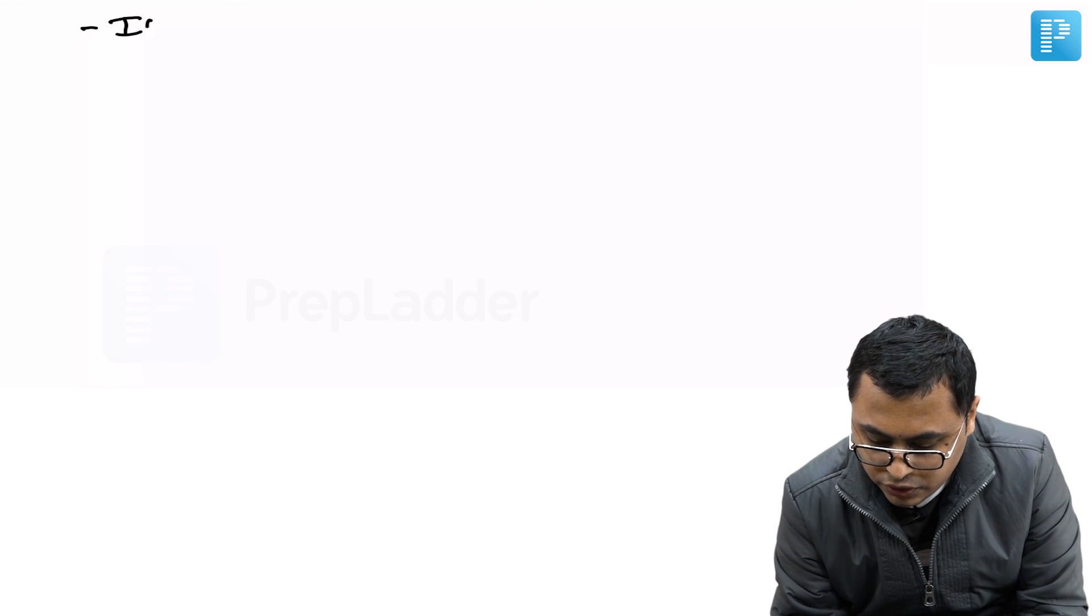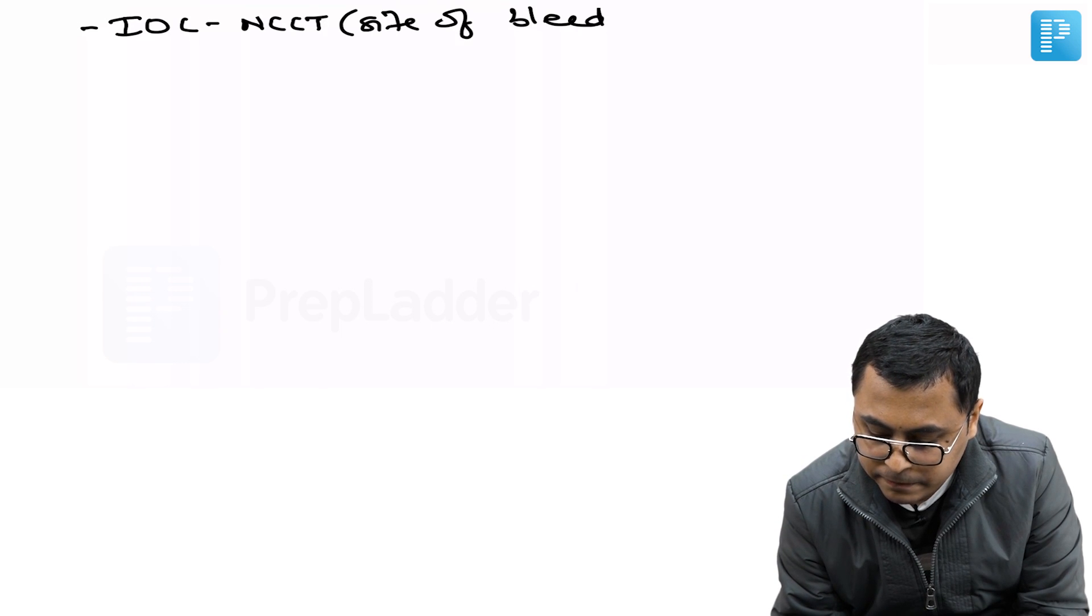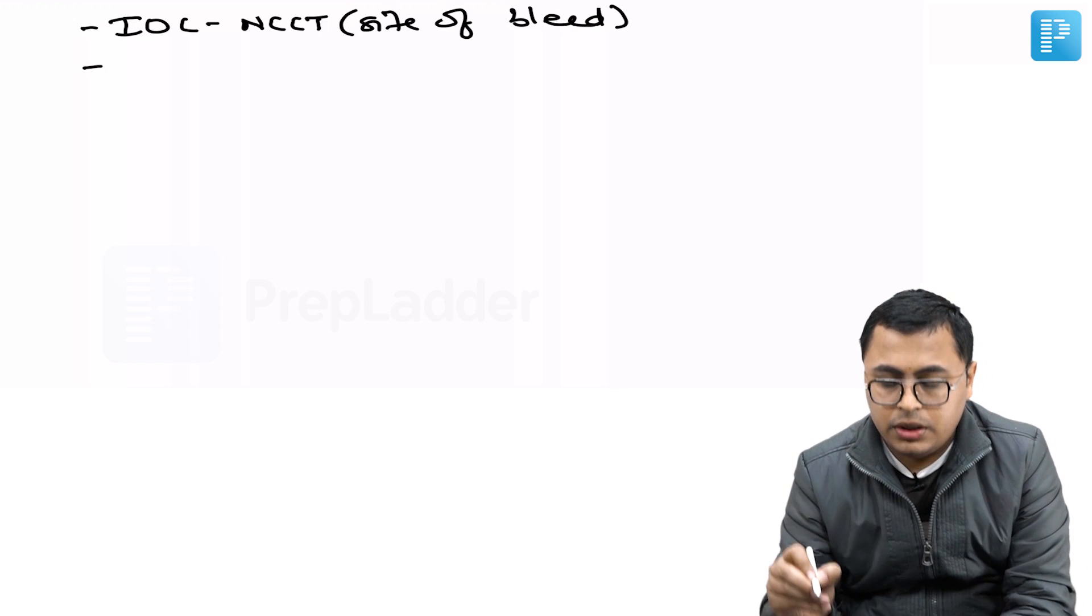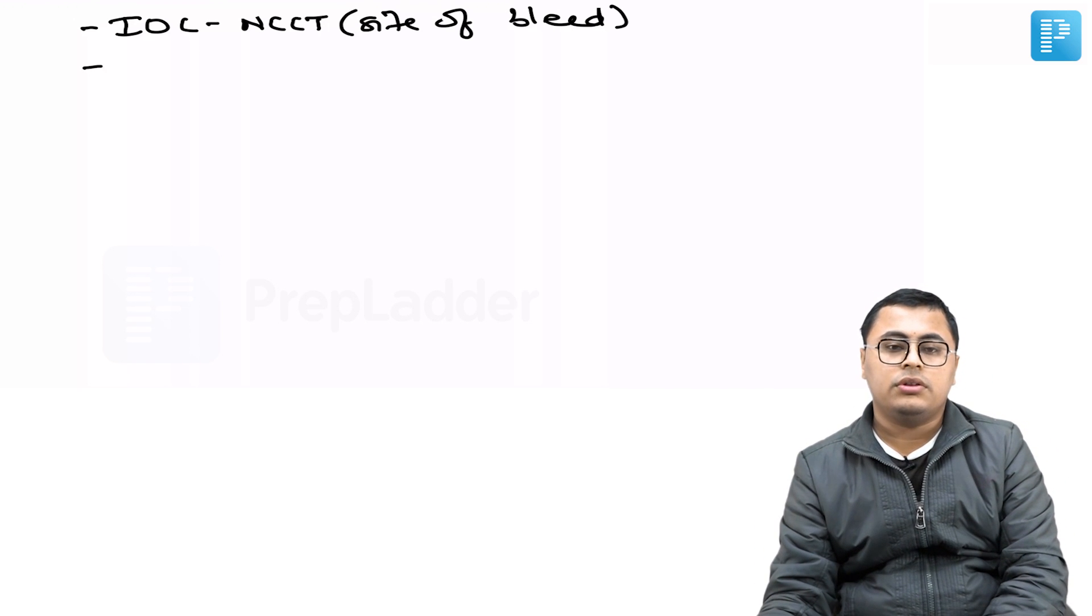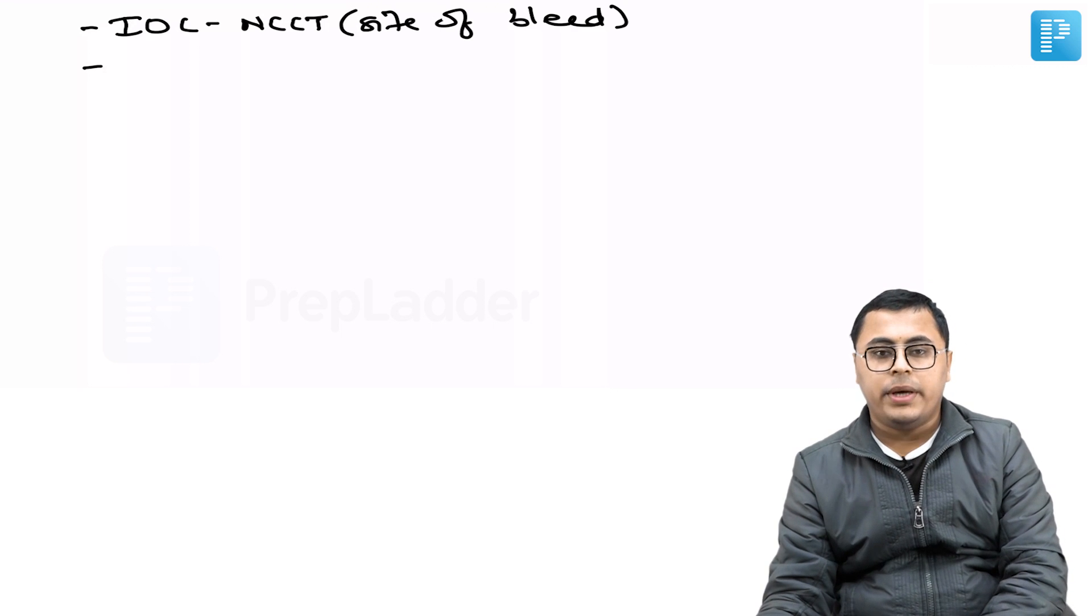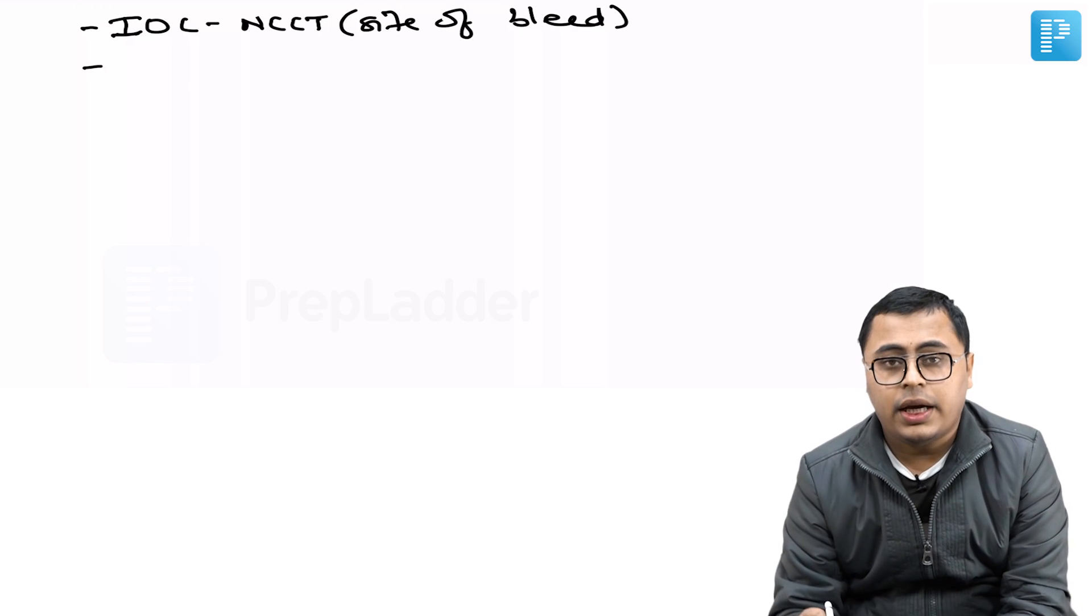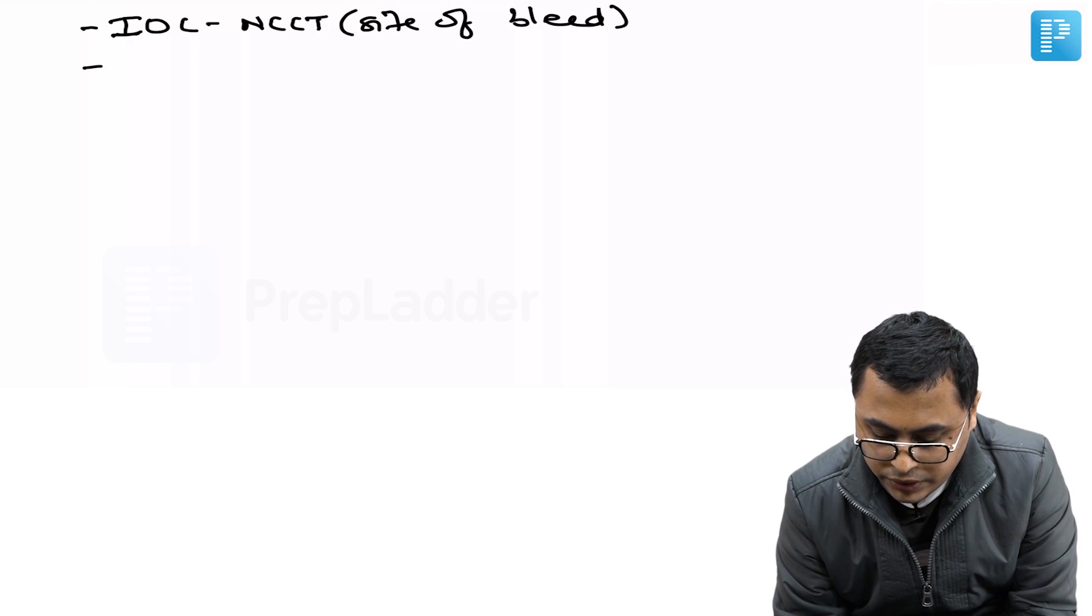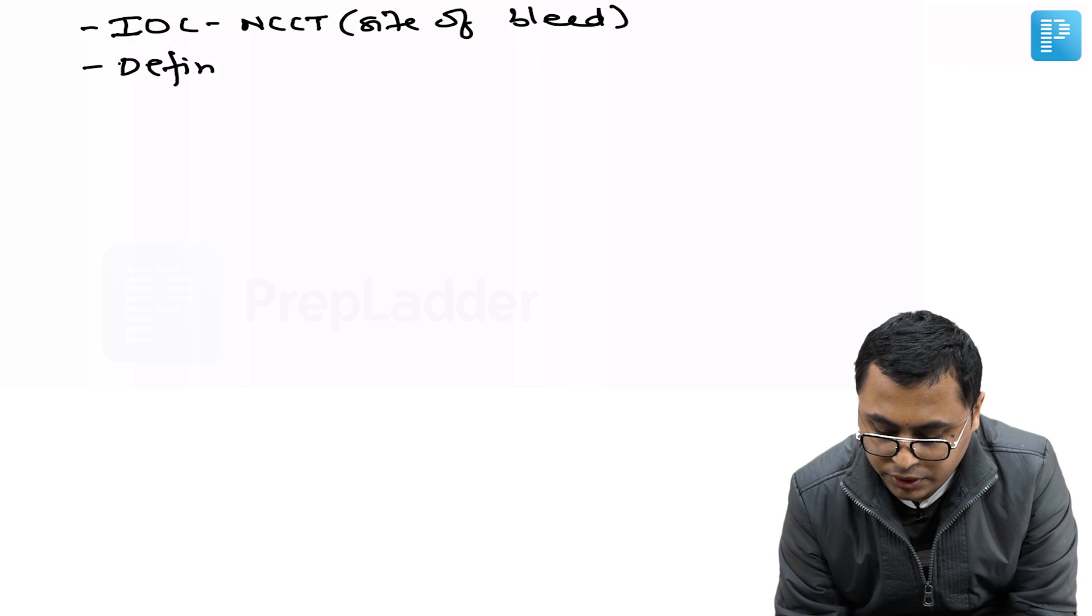As stated earlier, investigation of choice is primarily non-contrast CT to diagnose the site of bleed. As most cases of spontaneous subarachnoid hemorrhage are due to rupture of a berry aneurysm, to find out the site and type of aneurysm, various investigations are there, the definitive ones.